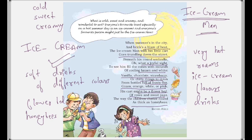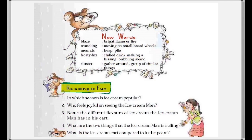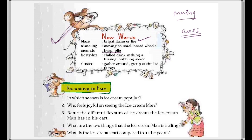Now let's look at some new words. 'Blaze' means a bright flame of fire — very hot. 'Trundling' means moving on small broad wheels — basically moving around; we heard that the ice cream man trundles around with his cart. 'Mounds' means heap or pile — when we put the flavor in the cone, we make mounds of ice cream in it.